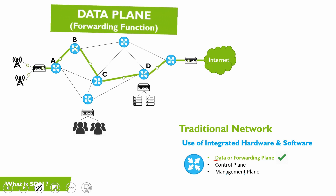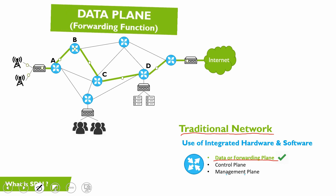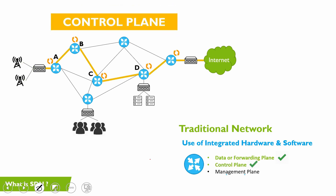The first plane is the data plane, also called the forwarding plane. In a traditional network, multiple routers and switches are connected to each other via line cards and links. This is where data is actually moved from one device to another. As visible on the screen, traffic moves all the way from router A to router B to router C to router D — that is the data or forwarding plane.